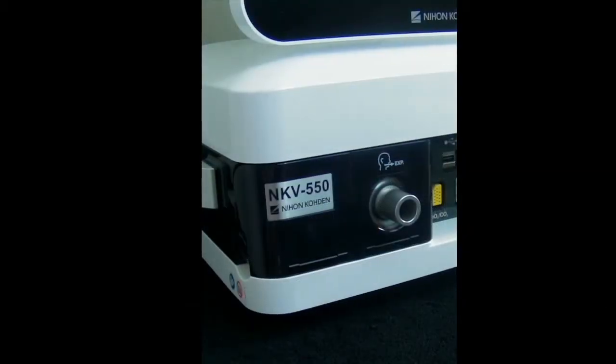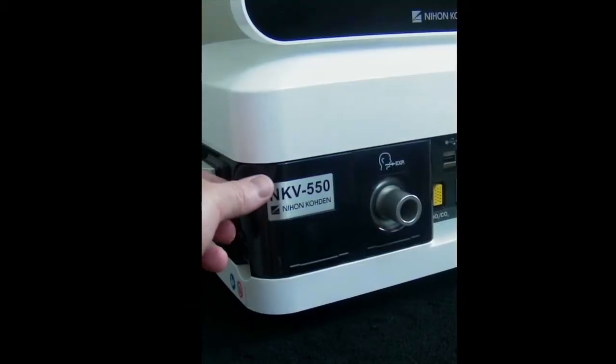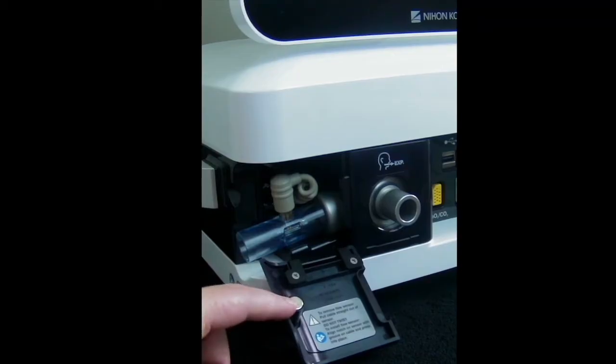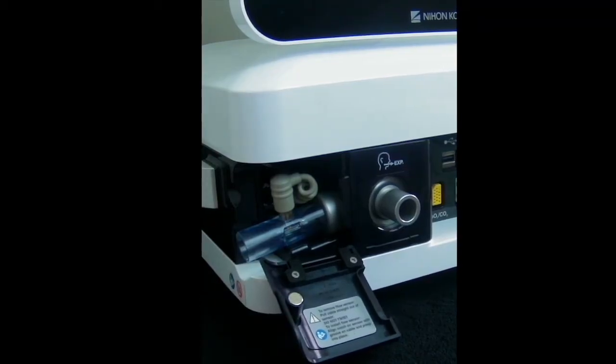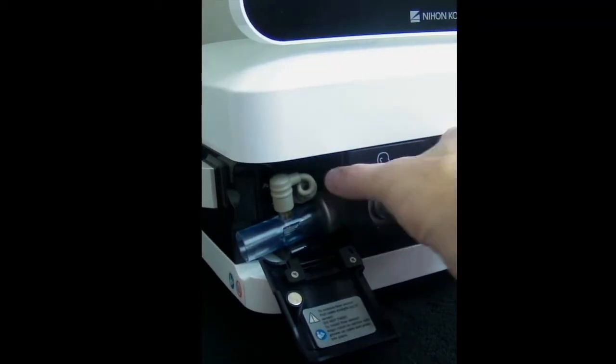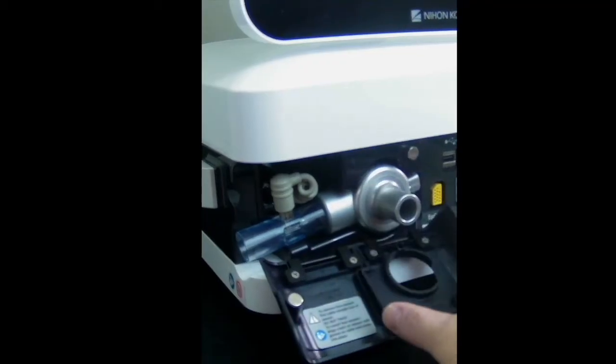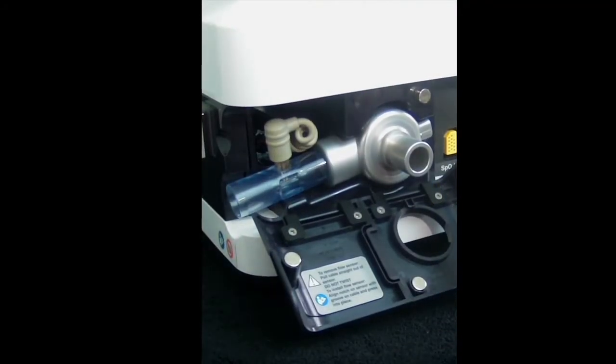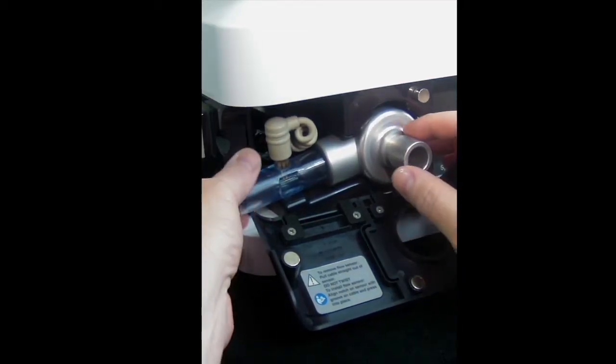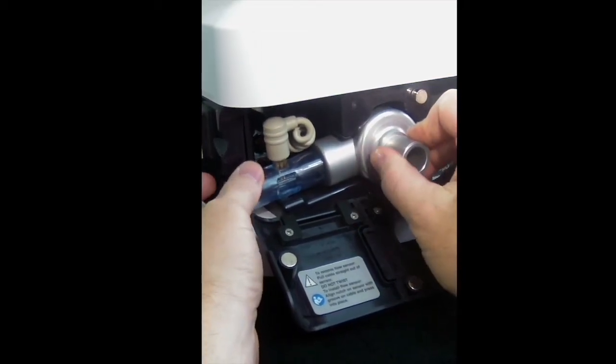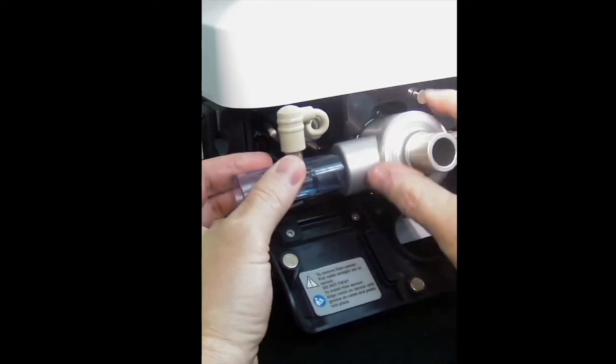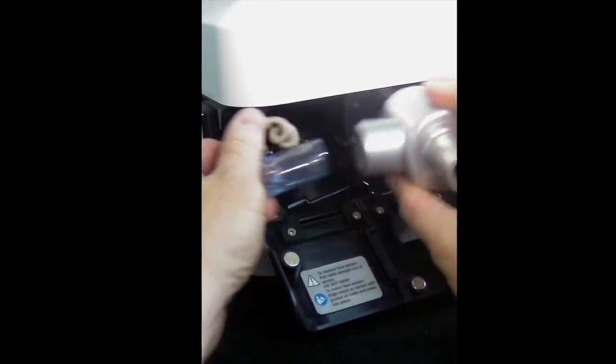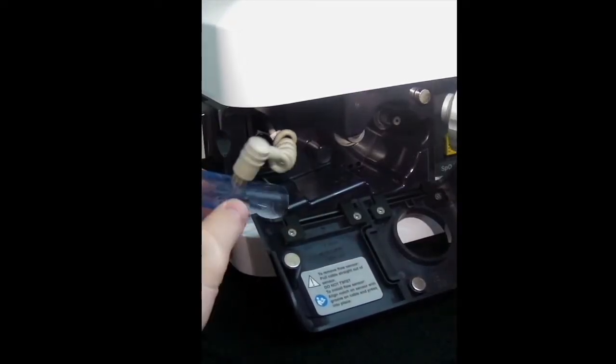To check the exhalation valve parts, open the exhalation flow sensor access door and the exhalation module access door on the left side of the breath delivery unit. Remove both assemblies by pulling outward on the exhalation valve port. Sometimes it just needs a little wiggle to remove it. Pull it out and remove the exhalation flow sensor from the expiratory valve assembly.